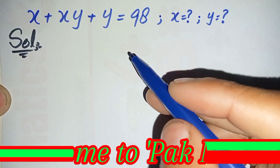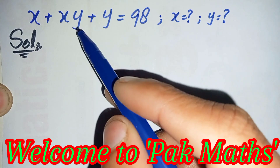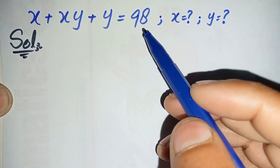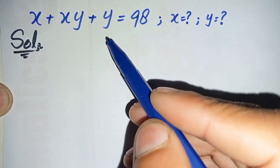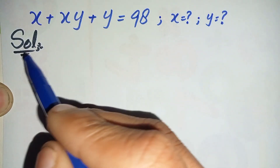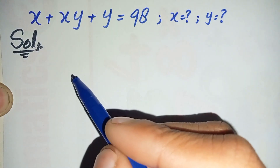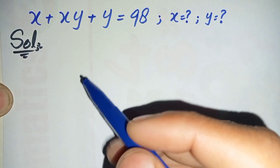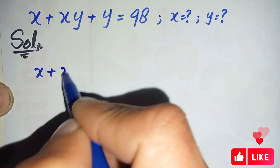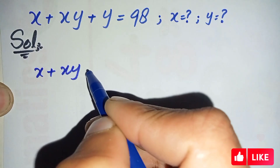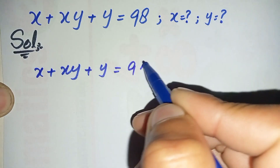Hi everyone, welcome to Parkmas. We will solve x plus x times y plus y equals 98 for x and y. To solve this math problem properly and step by step, we will write the solution and then write this question again and try to solve it step by step. The question is: x + x·y + y = 98.